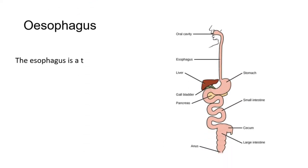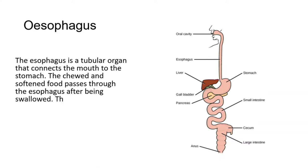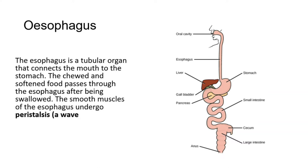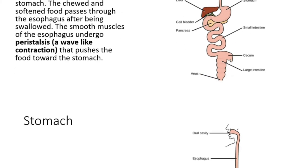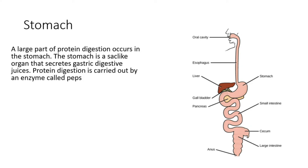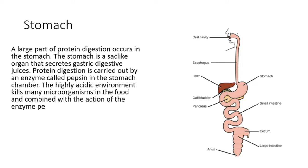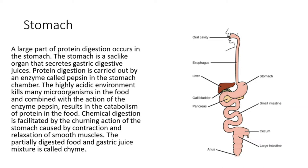The esophagus is a tubular organ that connects the mouth to the stomach. The chewed and softened food passes through the esophagus after being swallowed. The smooth muscle of the esophagus undergoes peristalsis, a wave-like contraction that pushes the food toward the stomach. A large part of protein digestion occurs in the stomach. The stomach is a sac-like organ that secretes gastric digestive juices. Protein digestion is carried out by an enzyme called pepsin in the stomach chamber. The highly acidic environment kills many microorganisms in the food, and combined with the action of pepsin, results in the catabolism of protein in the food. Chemical digestion is facilitated by the churning action of the stomach caused by contraction and relaxation of smooth muscles.